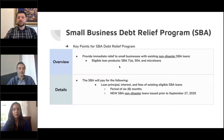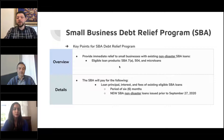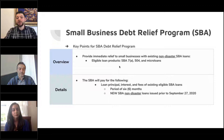The second prong of this program is for new SBA non-disaster loans that are issued prior to September 2020 — these can also qualify for this six-month loan principal, interest, and fee waiver.